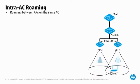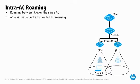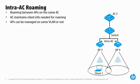Intra-AC roaming occurs when a client roams between APs controlled by the same AC. The AC maintains all client authentication info and user profiles, ensuring it can distribute this information to its APs as appropriate to accommodate fast-roaming. The APs can be managed via the same Layer 2 broadcast domain, or they can be on different Layer 3 subnets.